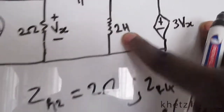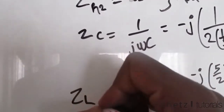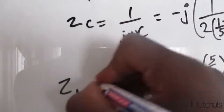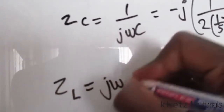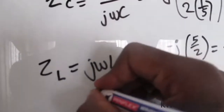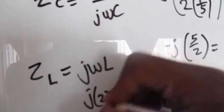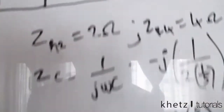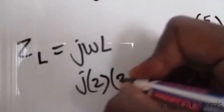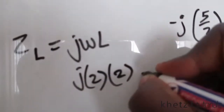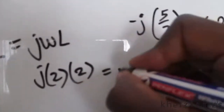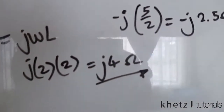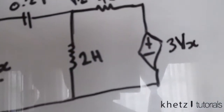All we're left with is the inductor. To find the impedance of an inductor we use the formula jωL. So j multiplied by ω = 2, multiplied by the inductance value of 2 henries, gives us j4 ohms. That is the impedance associated with this inductor.